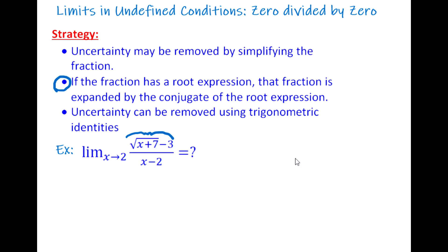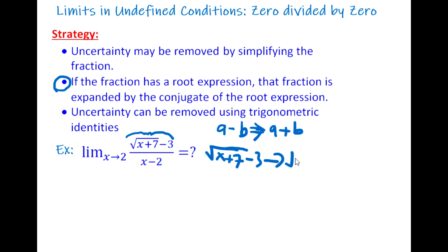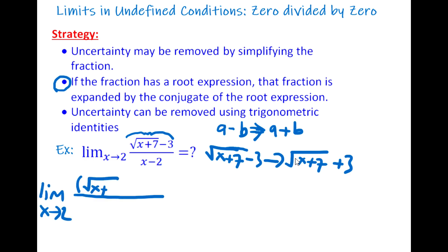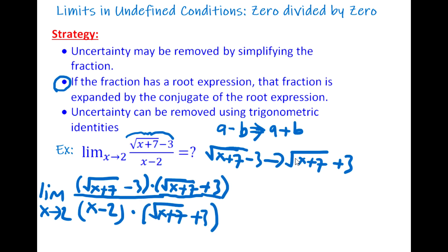The conjugate of (√(x + 7) - 3) is (√(x + 7) + 3) — we just change the minus to a plus. We multiply both numerator and denominator by (√(x + 7) + 3). This gives us (√(x + 7) - 3)(√(x + 7) + 3) in the numerator, divided by (x - 2)(√(x + 7) + 3).